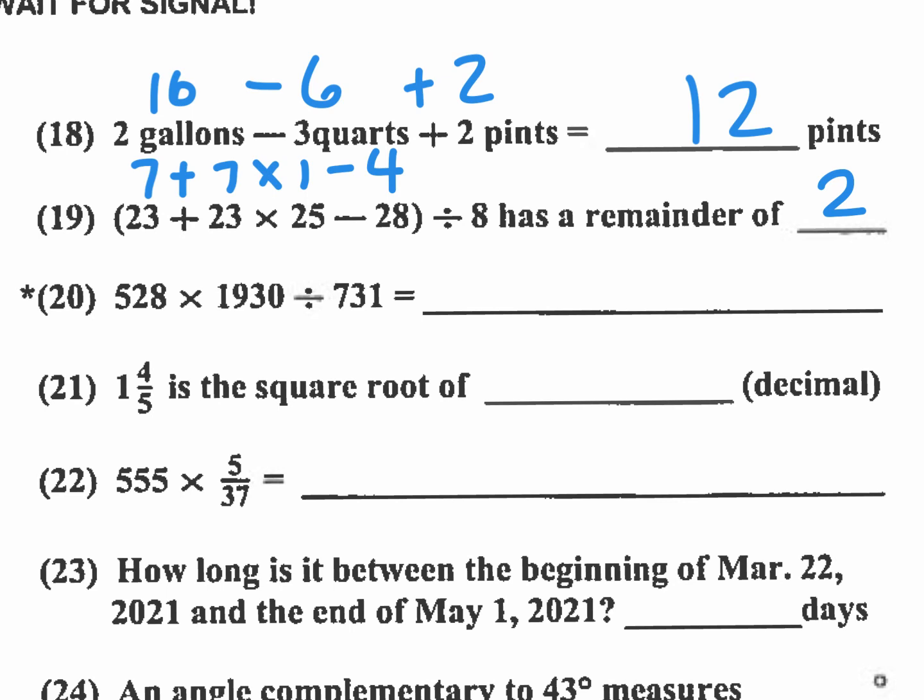Number 20 is the star problem. It's an approximation. And this is going to be the last one in this video. I will give you some bonus problems from the rest of the test if you hang on to the end here. 528 times 1930 divided by 731 equals what as an approximation? So I have to divide by 730. And so I have 528 over 730. That's pretty close to 5 sevenths. Now 5 sevenths is roughly about 70%. So take 70% of 2000. And that's 1400. And that's right in the middle. And that's a pretty good approximation.